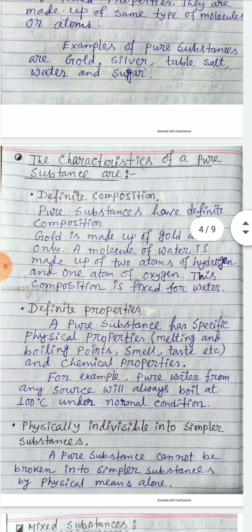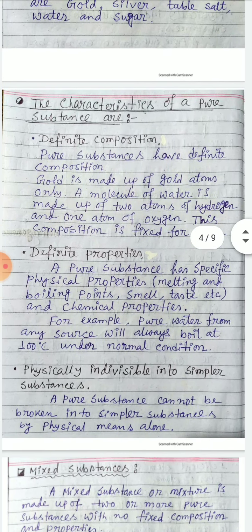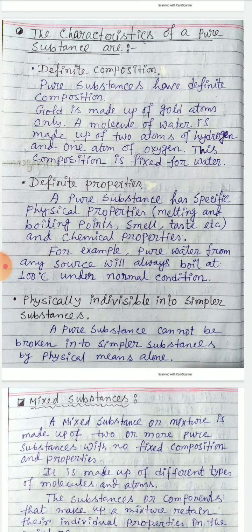Characteristics of pure substances: first, pure substances have definite composition. For example, gold is made up of only gold atoms, silver is made up of only silver atoms, and a molecule of water is made up of two atoms of hydrogen and one atom of oxygen — this composition is fixed.